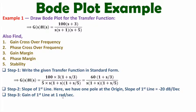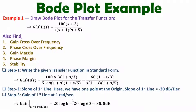In the third step we need to identify the gain of the first line at frequency 1 radian per second. This gain is based on the constant K. Here the constant K is 60 in standard form, so the gain will be 20 log K. Since K is 60, the gain at ω = 1 radian per second for the first line will be 35.5 dB.